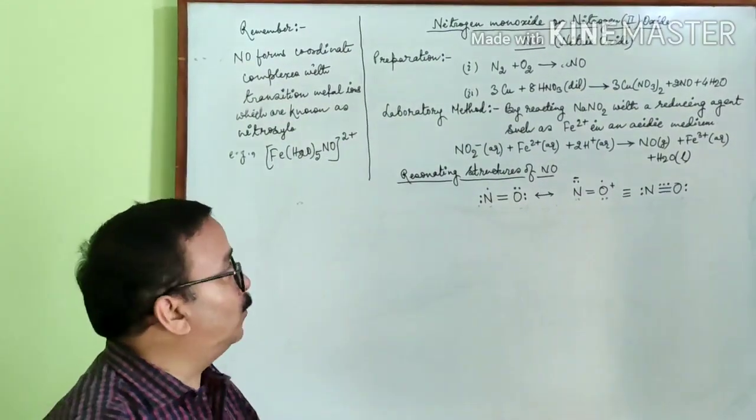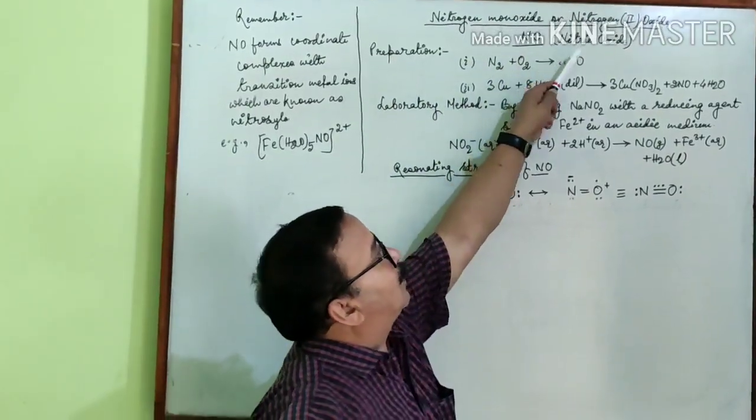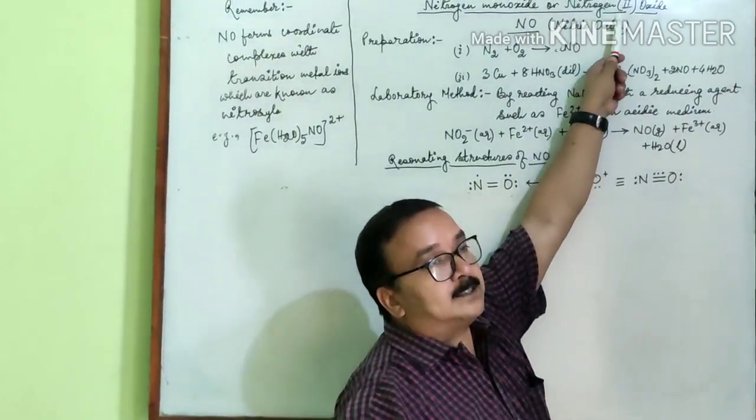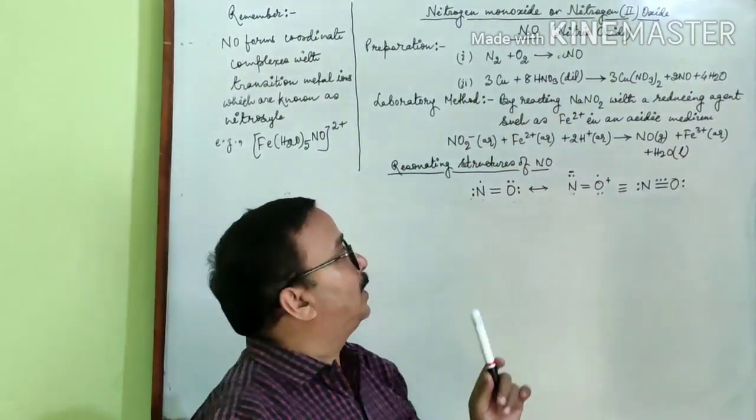First is NO, that is nitrogen monoxide or nitrogen(II) oxide. Here 2 is the oxidation state of nitrogen which is written in roman letters.